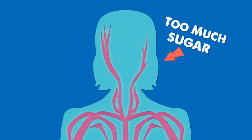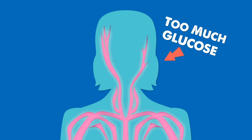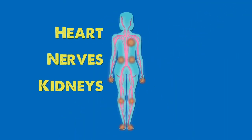Well, over time, too much sugar, or glucose in your blood, can damage your heart, nerves, kidneys, and eyes.